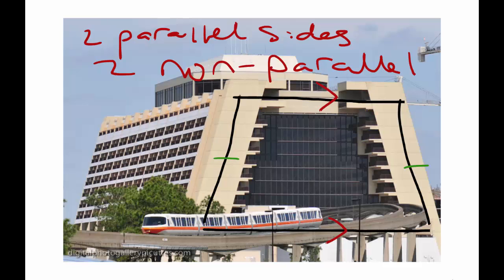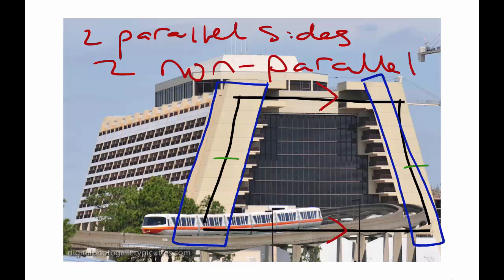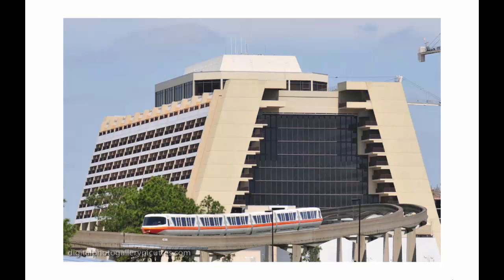Trapezoids are fairly simple to deal with. You still have the same 180-degree rule, except the supplementary angles are only on those two parallel sides. So this angle combined with this one will be supplementary, and this angle combined with this one will be supplementary — because they're same-side interior angles.